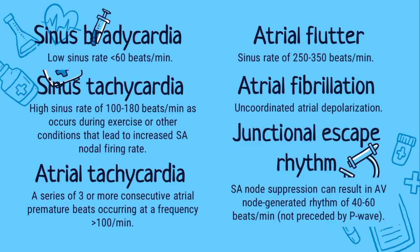Next is the junctional escape rhythm. It is characterized by QRS complexes of morphology identical to that of sinus rhythm without preceding P waves. Sinoatrial node suppression can result in an AV node-generated rhythm of 40 to 60 beats per minute.